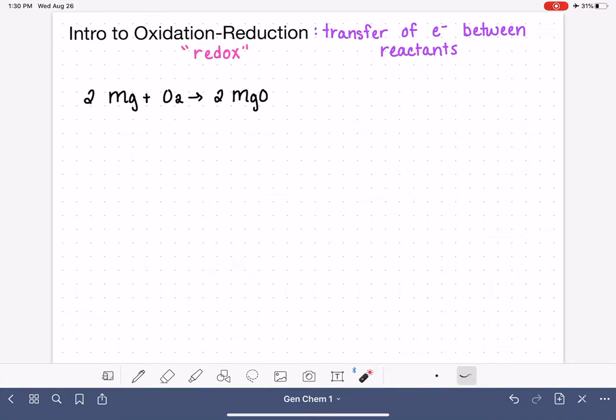When you look at this reaction, it's really difficult to identify it as an oxidation reduction reaction. It's not easy to see that electrons are being transferred between the magnesium and the oxygen. It's also really difficult to see which direction the electrons are going.